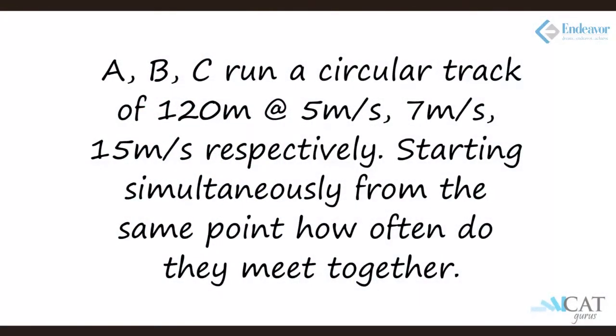A, B, C are running on a circular track. Now what is a circular track? A 400 meter track is normally a circular track. A 100 meter is normally a straight track. So A, B, C are running on a circular track of 120 meters. Speed of A is 5 meter per second. Speed of B is 7 meter per second. And speed of C is 15 meter per second.